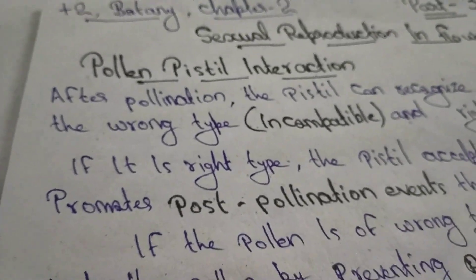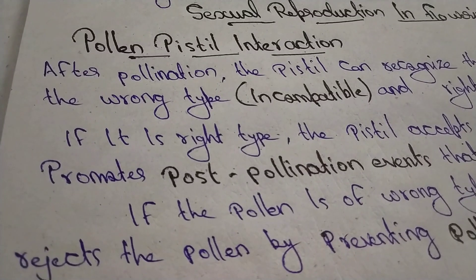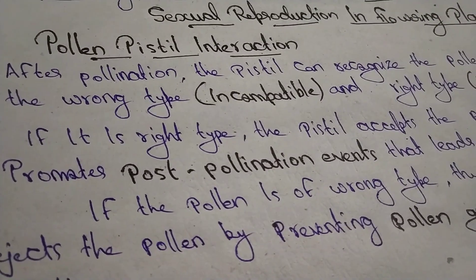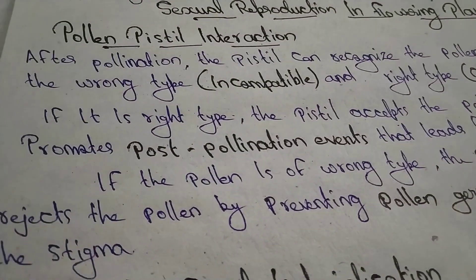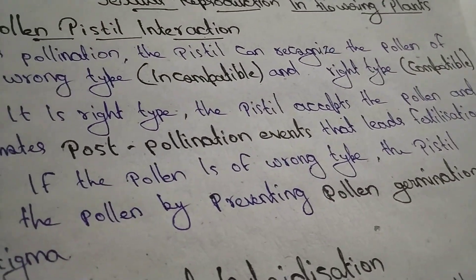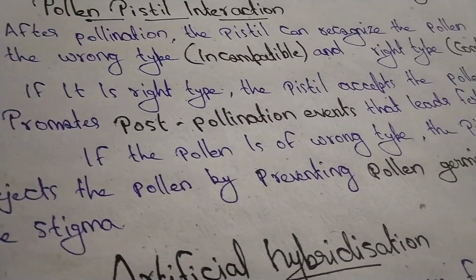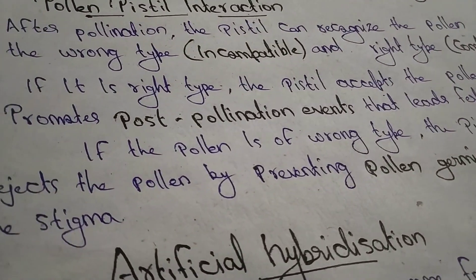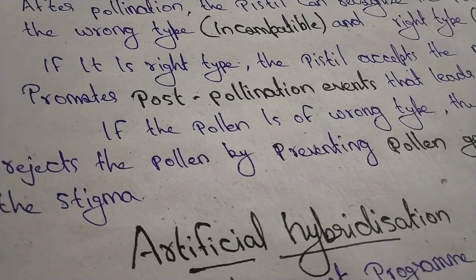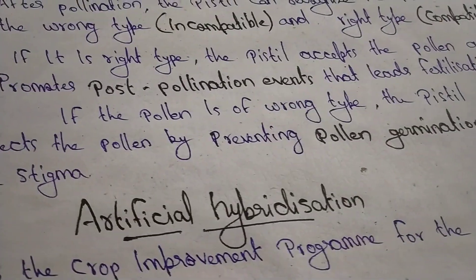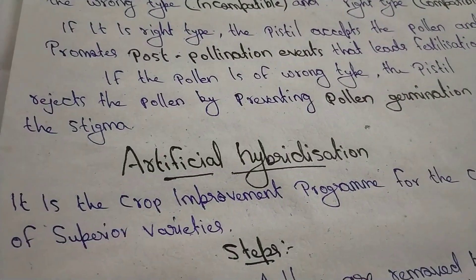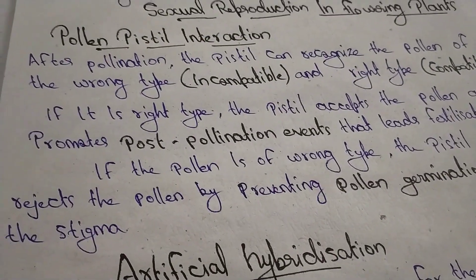Pollen-Pistil Interaction. What is the Pollen-Pistil Interaction? After pollination, the pistil can recognize the pollen of the wrong type — incompatible — and the right type — compatible. If it is the right type, the pistil accepts the pollen and promotes post-pollination events that lead to fertilization. If the pollen is the wrong type, the pistil rejects the pollen by preventing pollen germination on the stigma. This is the Pollen-Pistil Interaction.